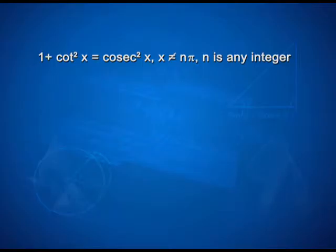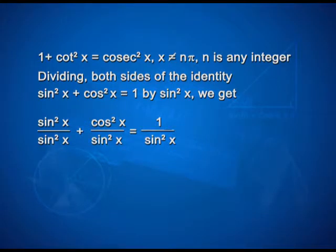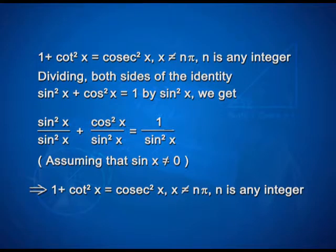Now we take up another identity: 1 + cot²x = cosec²x, where x ≠ nπ and n is any integer. This is derived by dividing both sides of sin²x + cos²x = 1 by sin²x. We get sin²x/sin²x + cos²x/sin²x = 1/sin²x, assuming sin x ≠ 0. This implies 1 + cot²x = cosec²x, where x ≠ nπ and n is any integer.